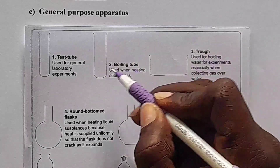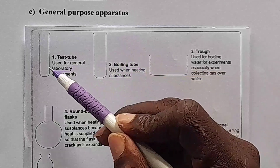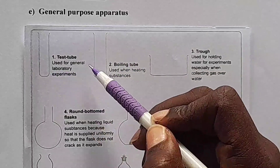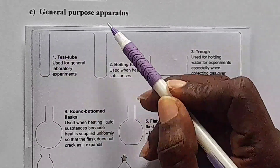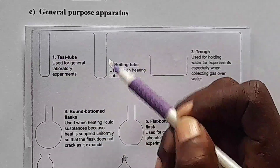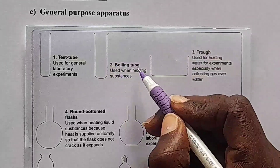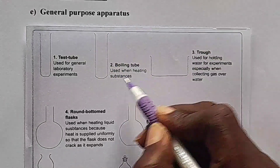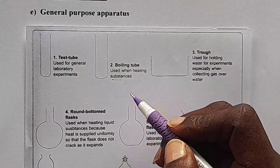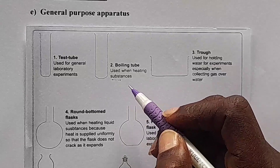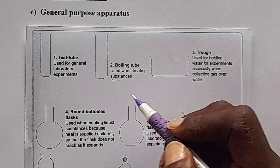Next, we are having a boiling tube. The difference between a test tube and a boiling tube is: a test tube is small, while a boiling tube is bigger. A boiling tube is used when heating substances. That is the function, or the use of a boiling tube.